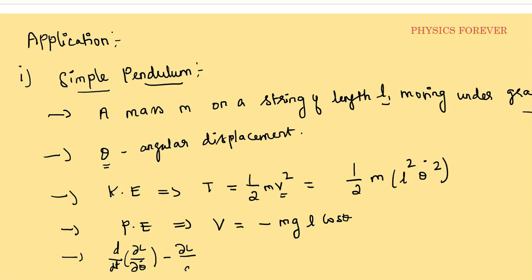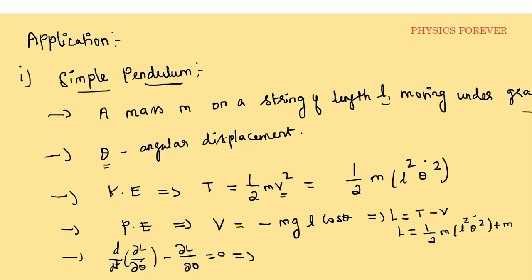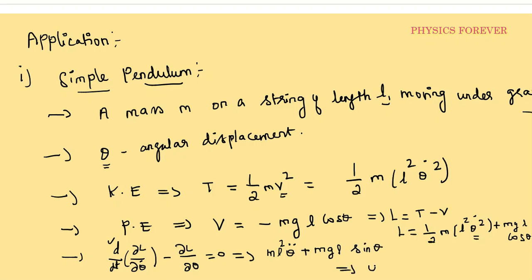Applying the Lagrangian: L equals one-half m l-squared theta-dot-squared plus m g l cos theta. Differentiating with respect to theta-dot and then taking d/dt, and differentiating with respect to theta, we obtain: m l-squared theta-double-dot plus m g l sin theta equals zero. Simplifying, theta-double-dot plus (g/l) sin theta equals zero. This is the equation of motion for the simple pendulum.